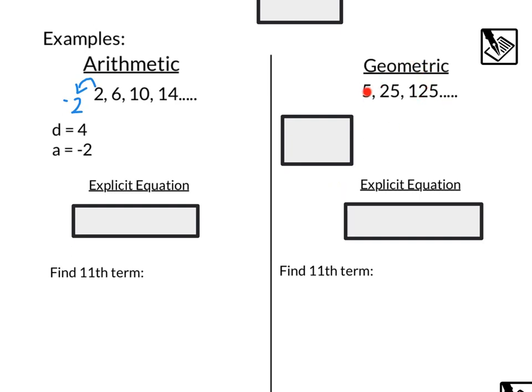For our geometric series, we've got 5, 25, 125. Looks like we're multiplying by 5 each time. That's our common ratio. And if we want to find the zeroth term, we need to divide by 5, which would give us 1. So we've got a common ratio of 5 and our zeroth term of 1.